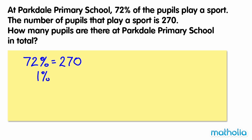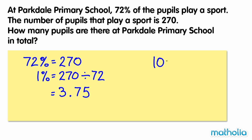1% equals 270 divided by 72, which equals 3.75. Multiplying by 100 to find 100% of the pupils gives 375. So there are 375 pupils at Parkdale Primary School.